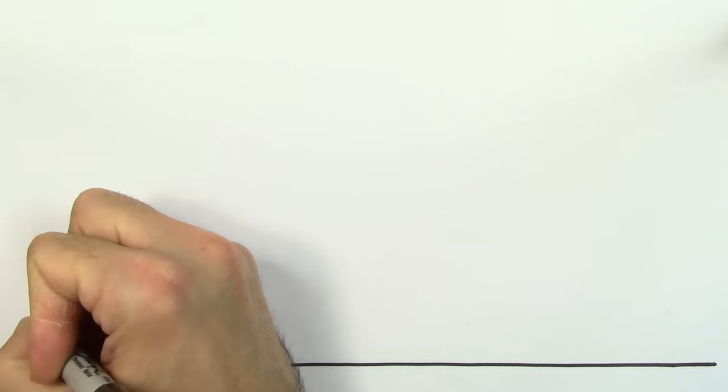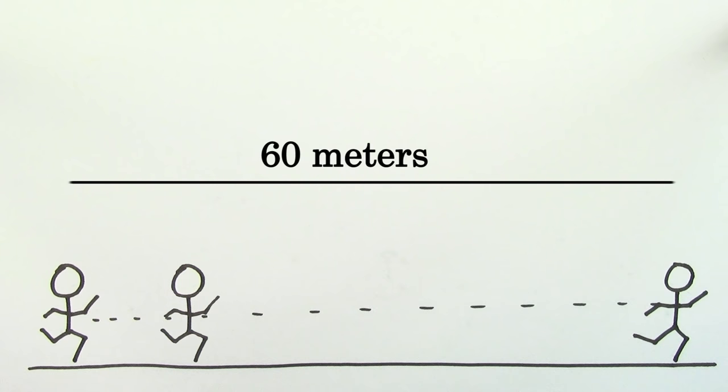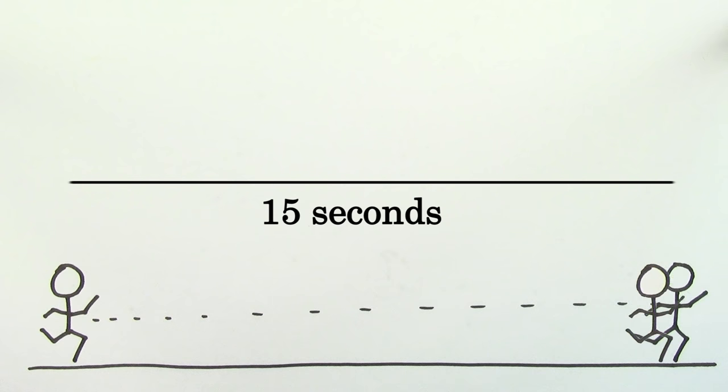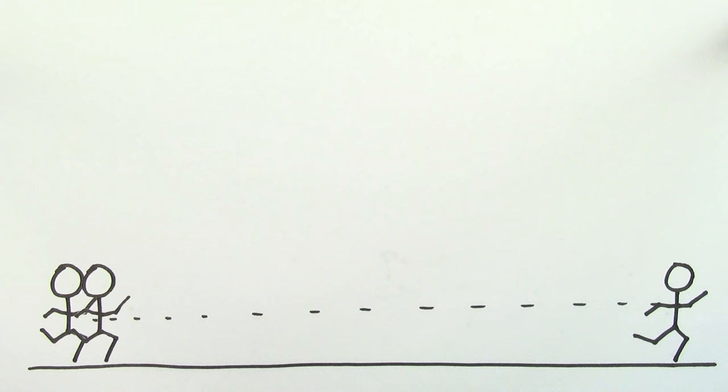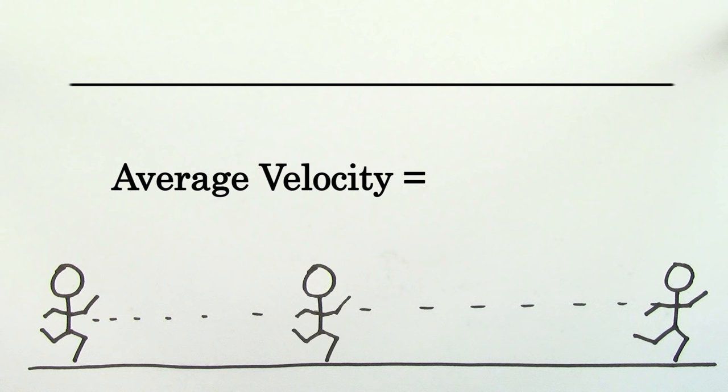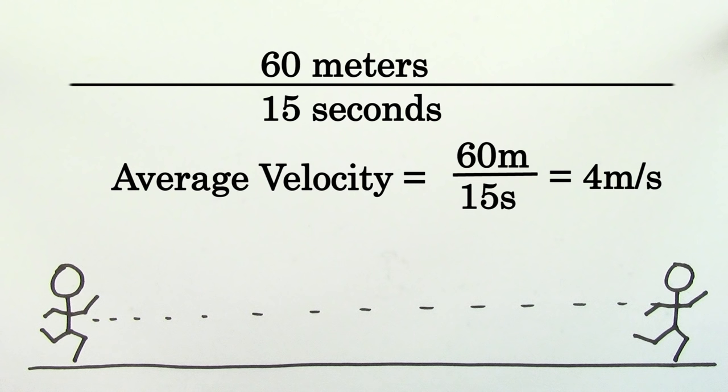In other words, let's say you jogged 60 meters in a time of 15 seconds. During this time, you were speeding up and slowing down and changing your speed at every moment. Regardless of the speeding up or slowing down that took place during this path, your average velocity is still just going to be 4 meters per second to the right, or positive 4 meters per second.